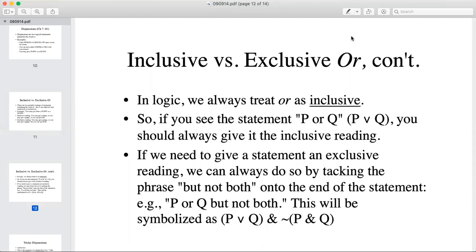This then will be symbolized as parenthesis P wedge Q, close parenthesis, ampersand, it's false that P and Q. So the first part, the P wedge Q, symbolizes the OR statement, the P or Q.